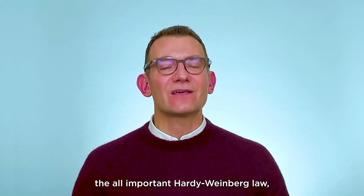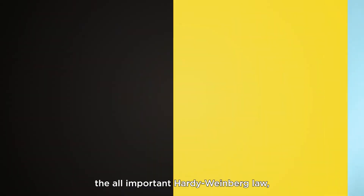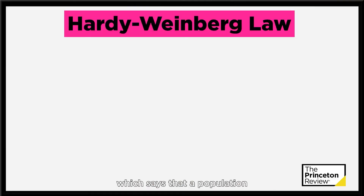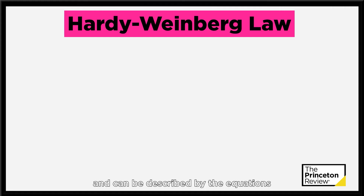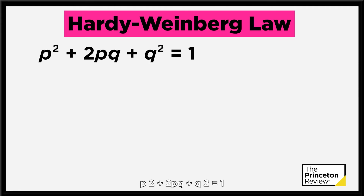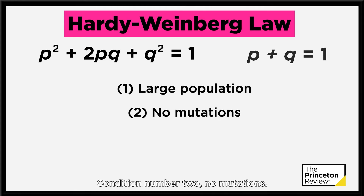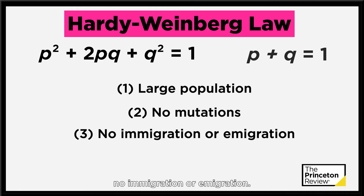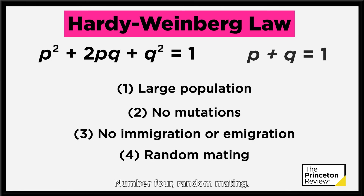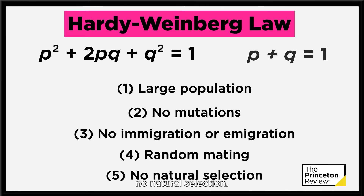Finally, you need to understand the all-important Hardy-Weinberg law, which says that a population will be in genetic equilibrium, described by the equations p² + 2pq + q² = 1 and p + q = 1, only if it meets these five conditions: condition one, a large population; condition two, no mutations; condition three, no immigration or emigration; condition four, random mating; condition five, no natural selection.